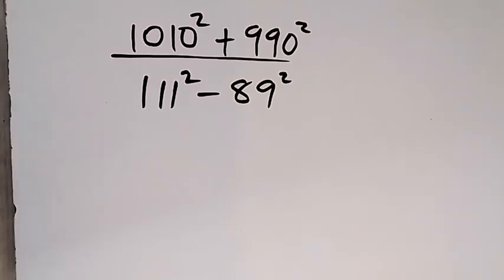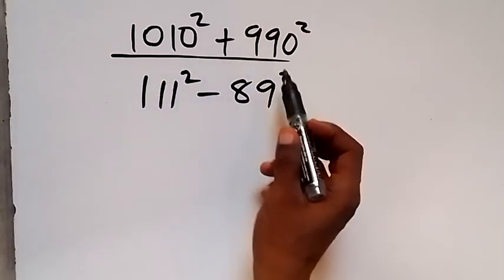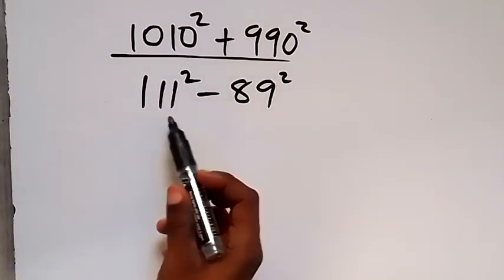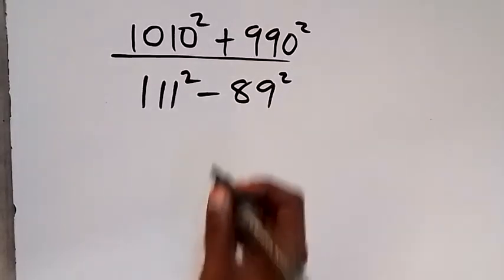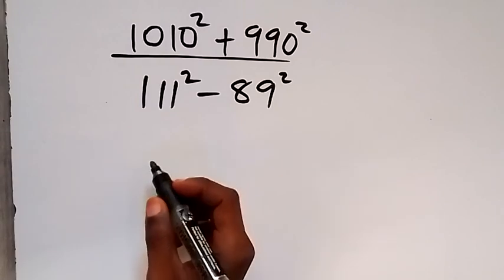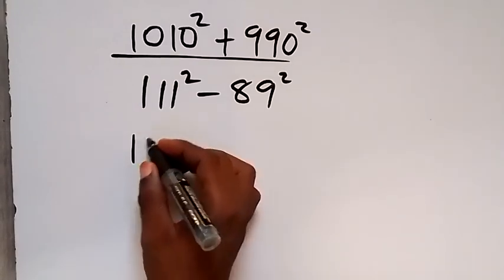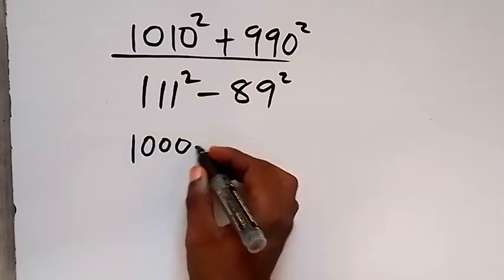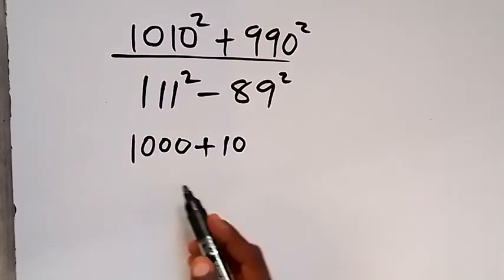Hello, how to solve this problem: 1010 squared plus 990 squared over 111 squared minus 89 squared. From here we can write the numerator again as 1000 plus 10, because this is 1010, so we can separate it.